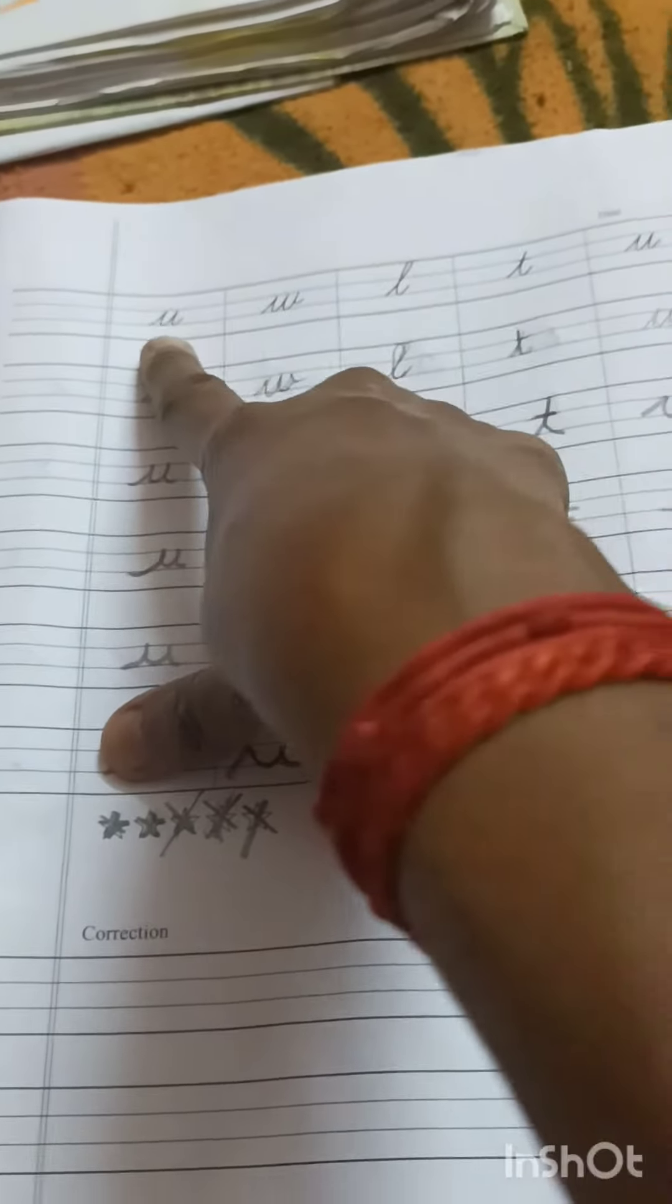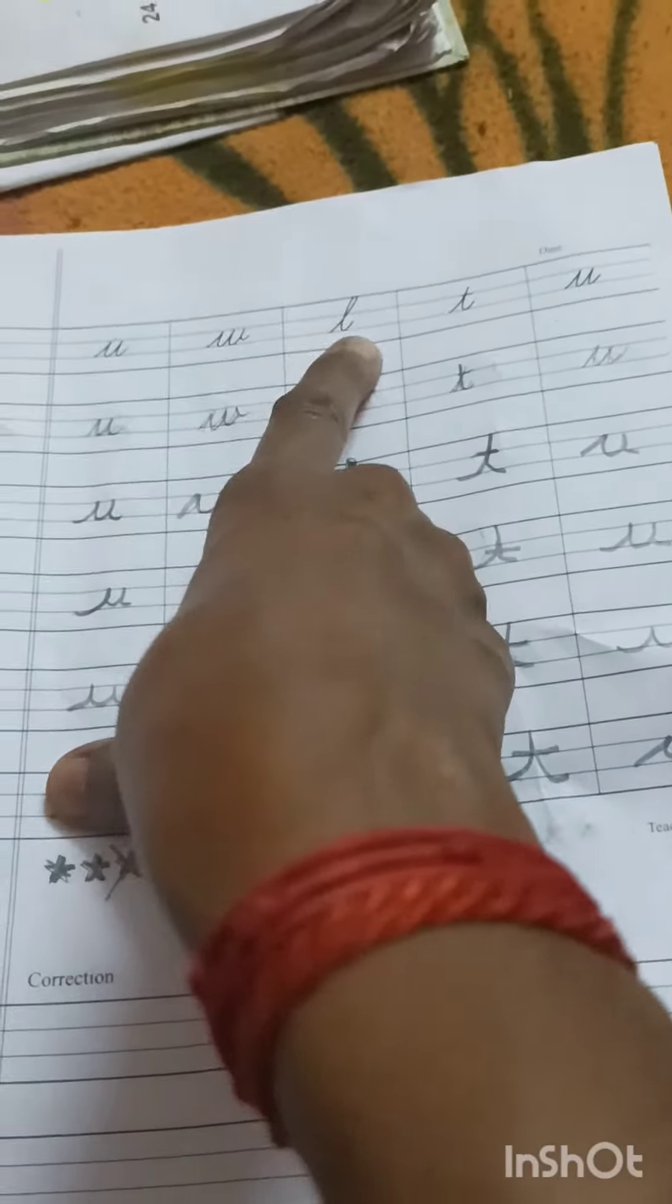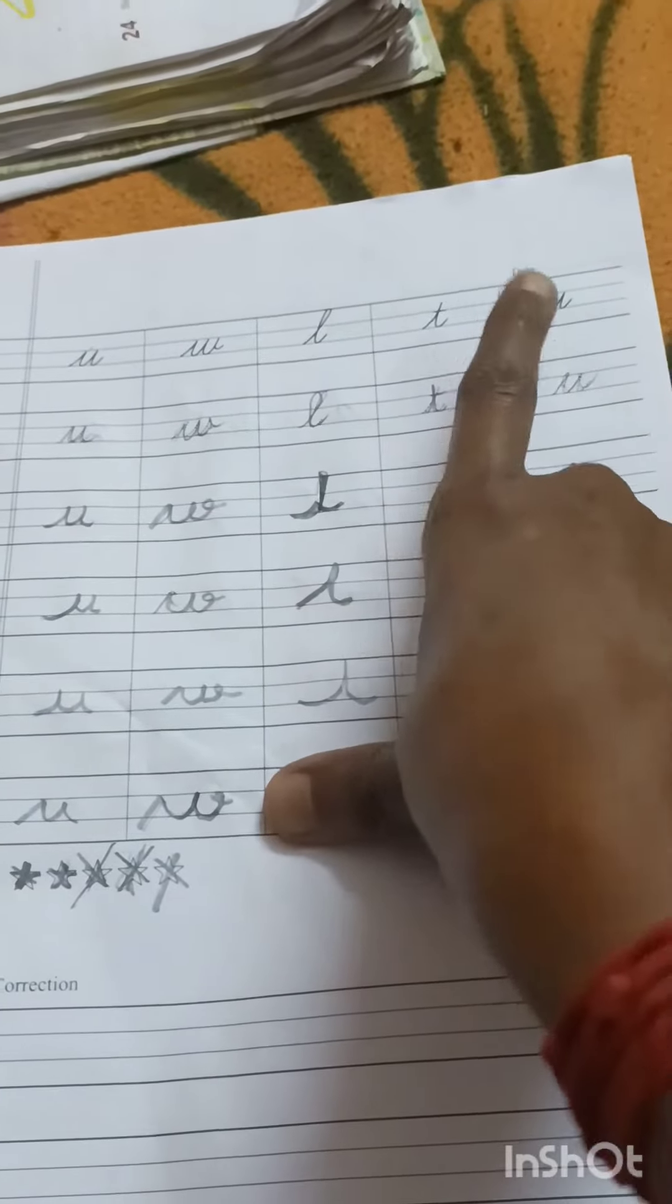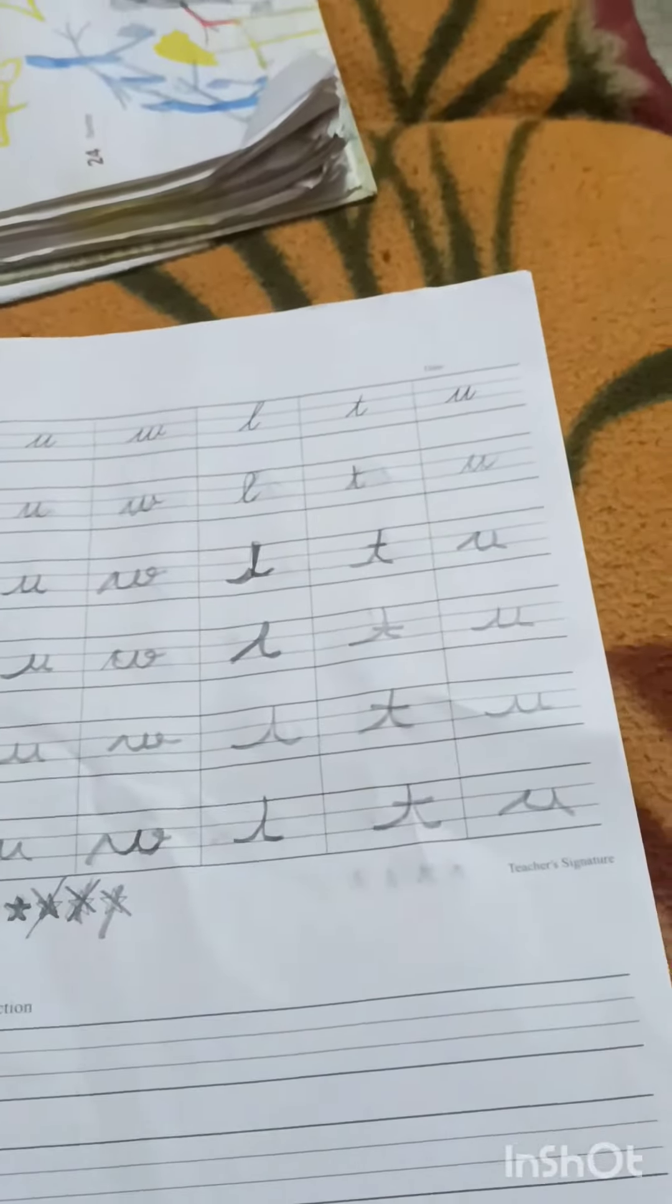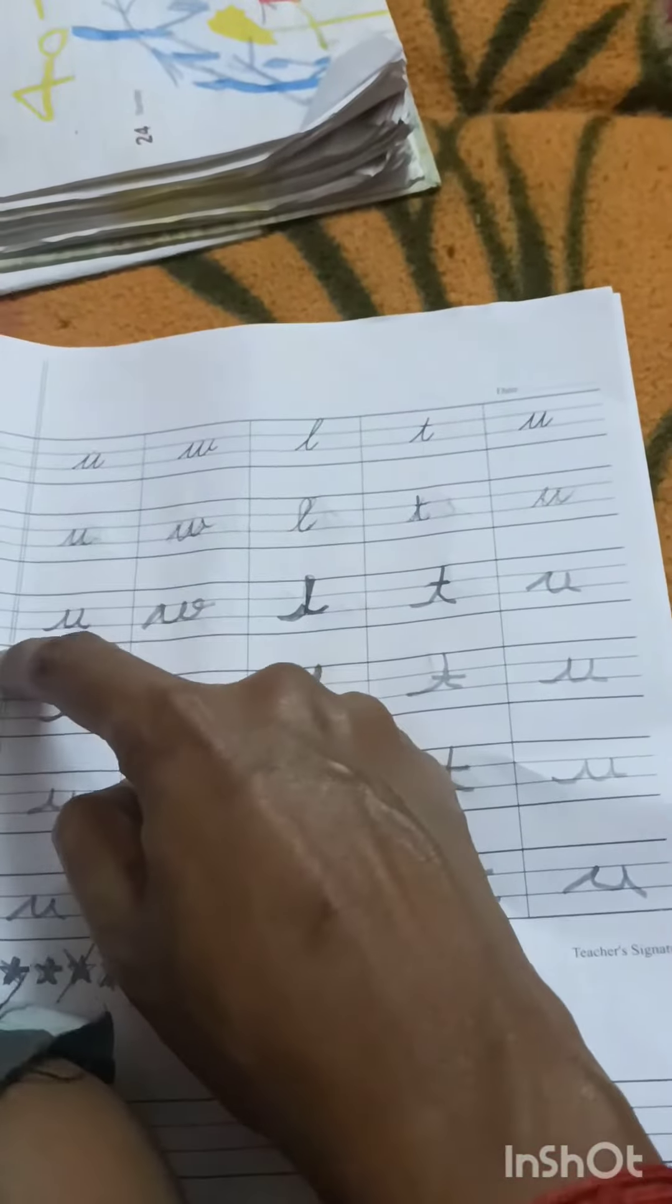Cursive writing: u, w, l, t, u - all these are from same strokes. I mean in the Marivaro friendly code.